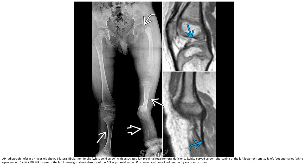AP radiograph in a 4-year-old with bilateral fibula hemimelia and associated left proximal focal femoral deficiency. There is shortening of the left lower extremity and left foot anomaly. A PD-MRI image of the left knee shows absence of the ACL and an elongated conjoined tendon.